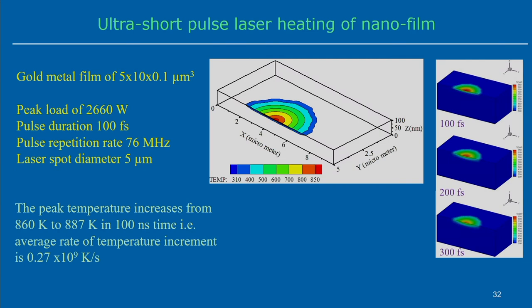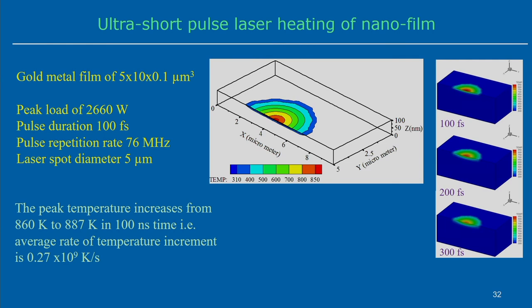We have already shown how the finite element model can be done. Now using that developed model we can show different results. The main objective is to identify how this thermal analysis differs from the Fourier heat conduction model. We start with a gold metal film of particular dimensions: 5 micrometers by 10 micrometers, with a depth of only 0.1 micrometers — that means a 100 nanometer thickness gold film — and how it interacts with the ultrasound pulse laser and how heat transfer phenomena can be explained.